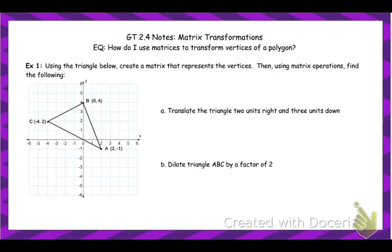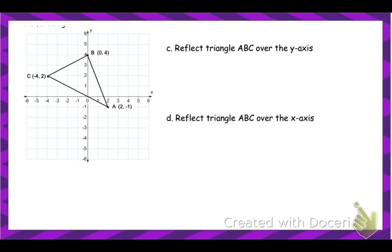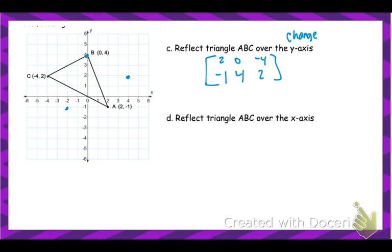Now we're going to look at matrix multiplication. We'll start by reflecting the triangle over the y-axis. Reflecting over the y-axis changes the X coordinates, which are in the top row of our matrix. We're going to multiply by a 2×2 matrix, and because of our order, the 2×2 has to go in front — that results in a 2×3, which is what we want.